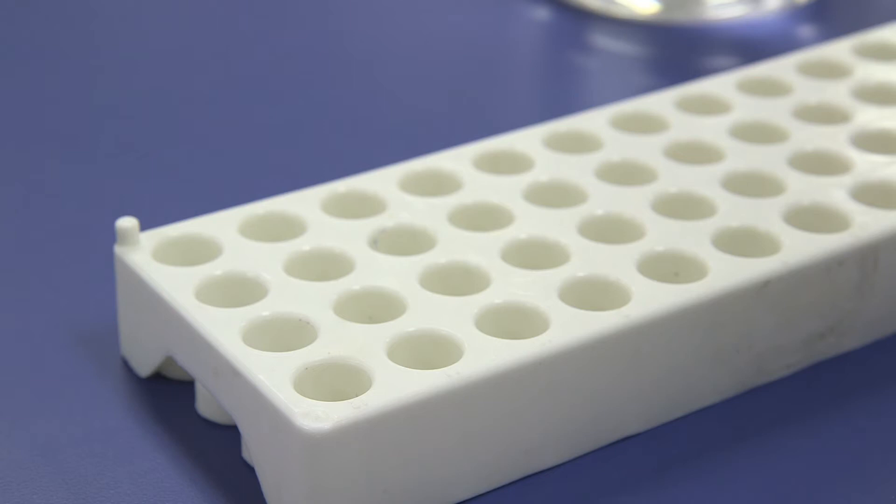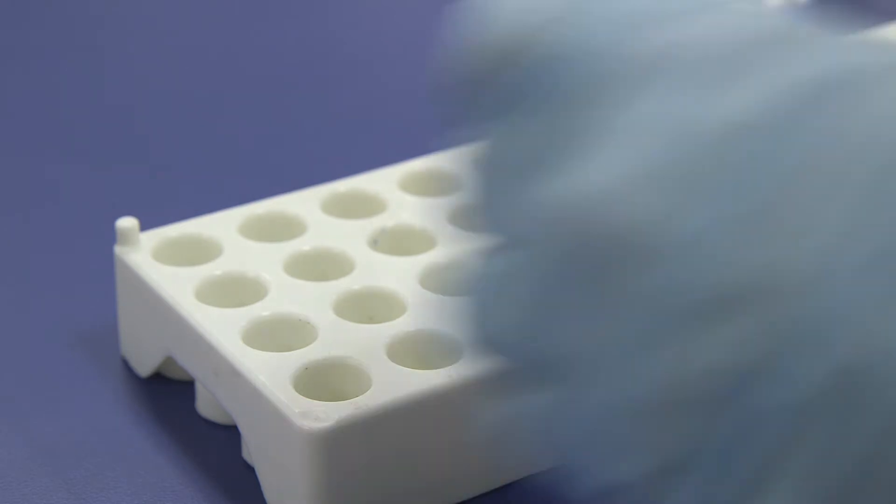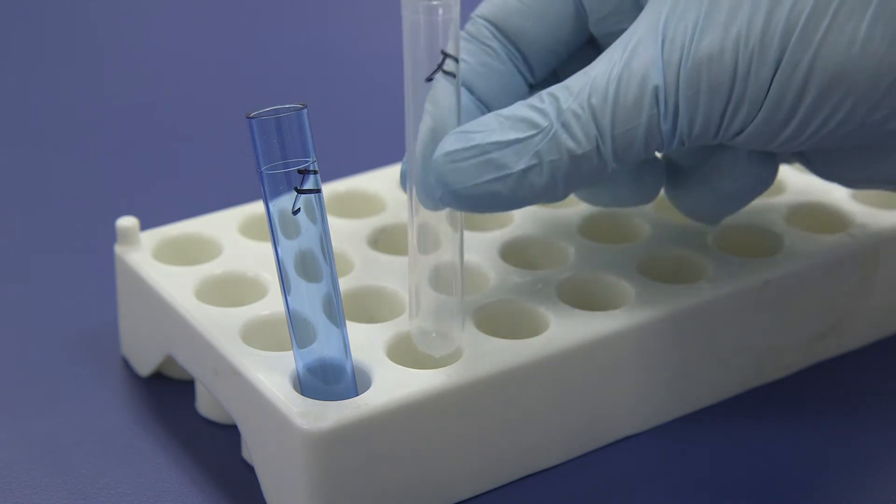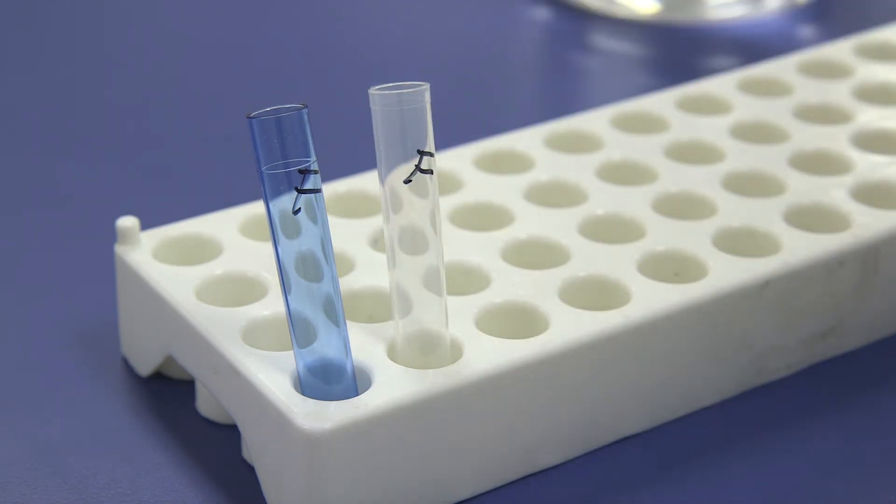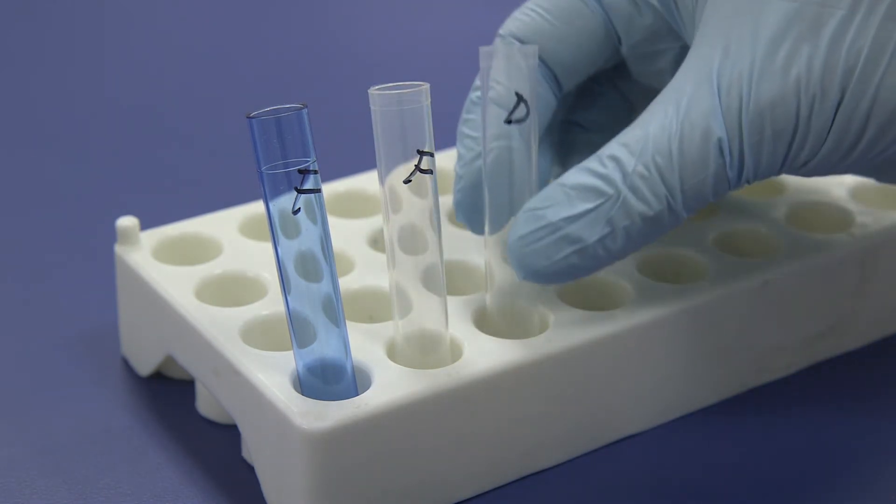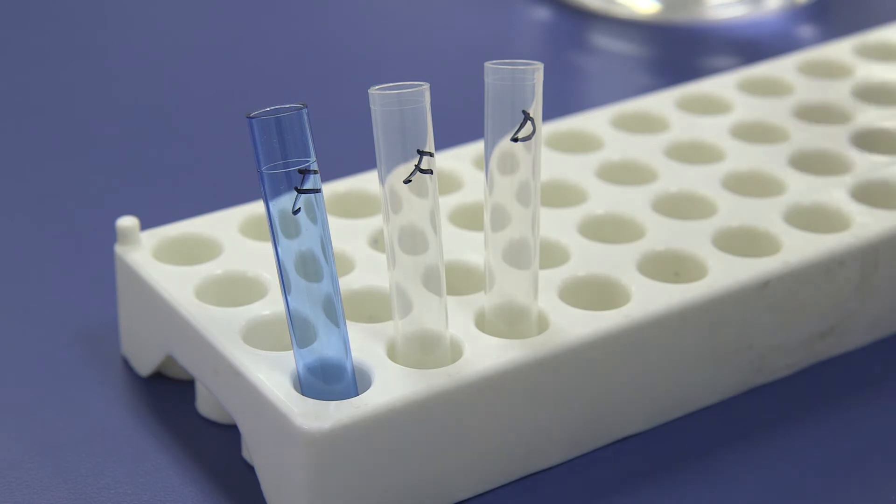To optimize your workflow, we recommend labeling tubes as follows when testing for all three mycotoxins. Label a blue dilution tube with F for Fumonisin. Label three clear reaction tubes: F for Fumonisin, D for DON, and A for Aflatoxin.